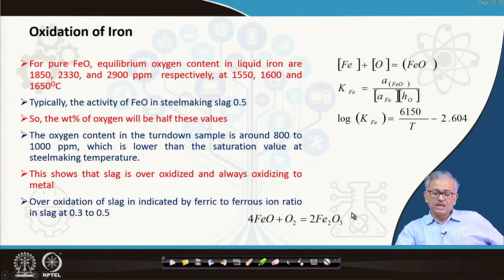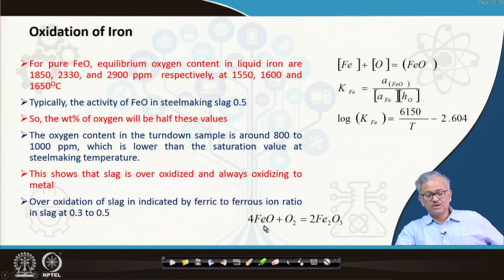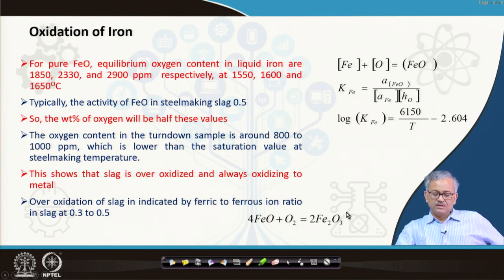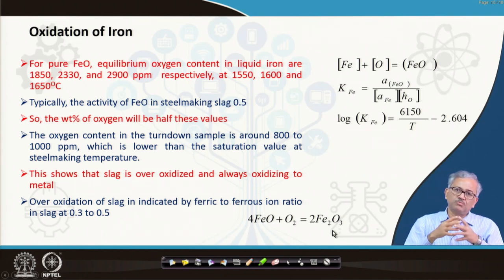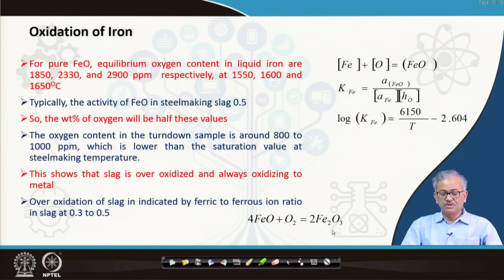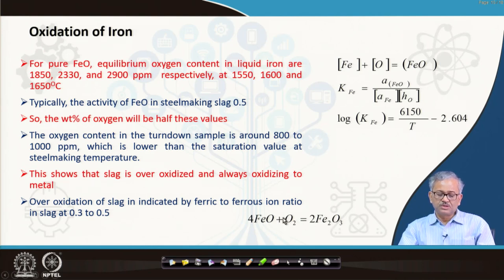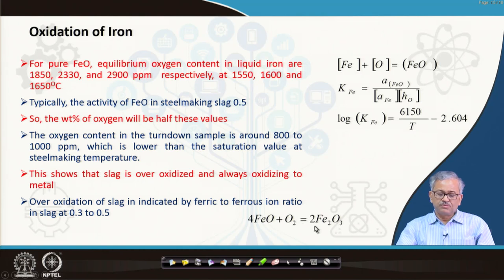Because much dissolved oxygen accumulates near the interface and cannot transport to the rest of the liquid metal, it oxidizes FeO to Fe₂O₃, so the slag remains over-oxidized and always oxidizing to the metal. Fe₂O₃ has a much higher oxidation potential than FeO — in the Ellingham diagram, Fe₂O₃ lies much above FeO. The FeO/Fe₂O₃ reaction may be responsible for the chemical potential of the slag, not just the Fe/FeO equilibrium.